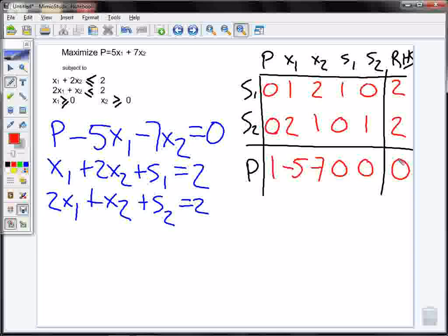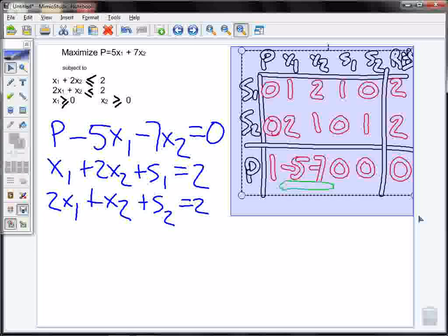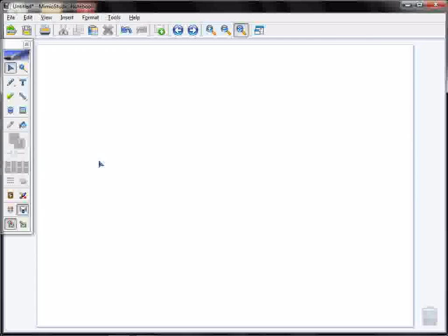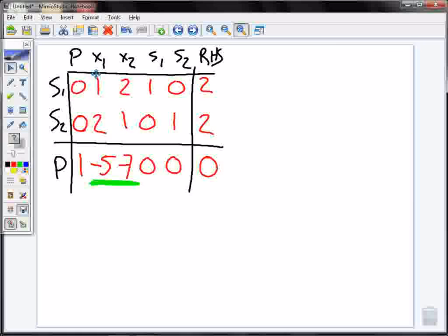So now I have my tableau laid out. And I must figure out a way to get rid of these negative numbers. These are bad. I can't be finished. I'm maximizing p. I want to maximize p, but I have these negative numbers. So I have to get rid of them. So that's what we're going to do next. We're going to figure out how to pivot my tableau in order to maximize p.